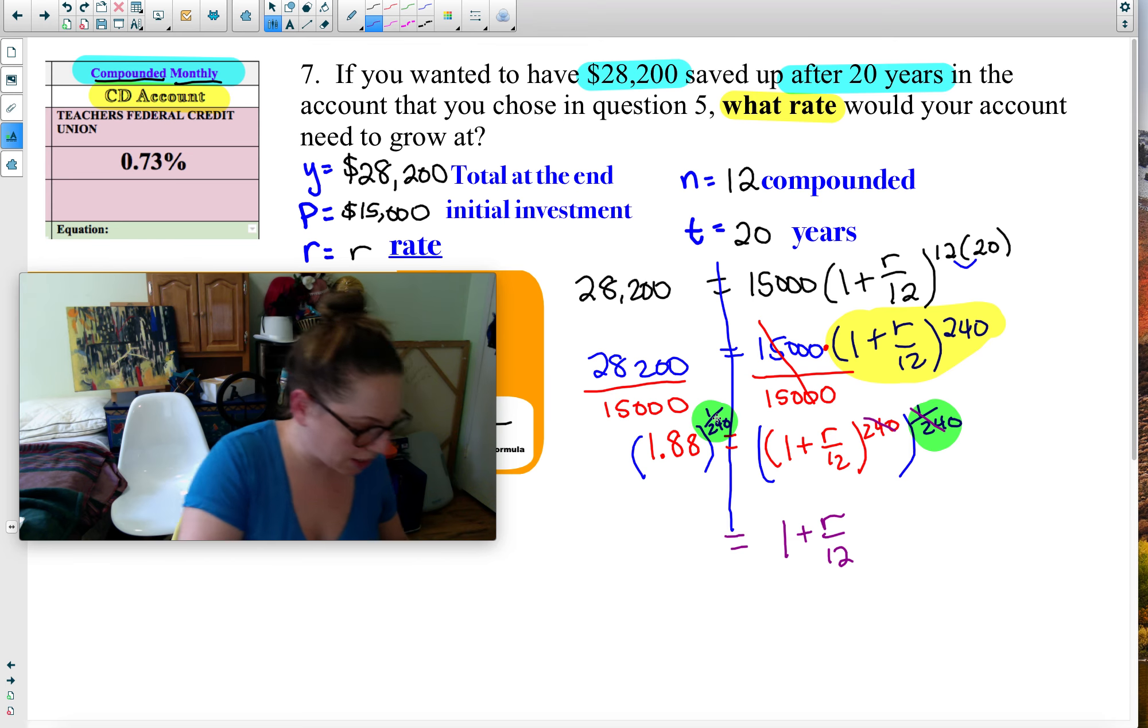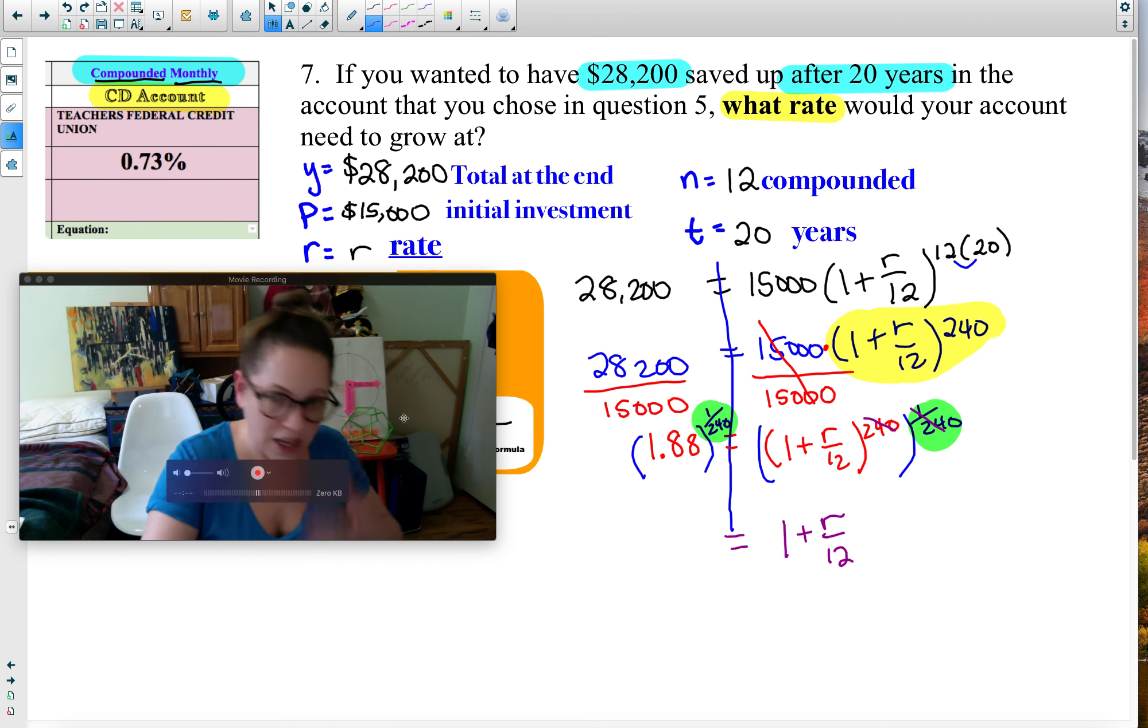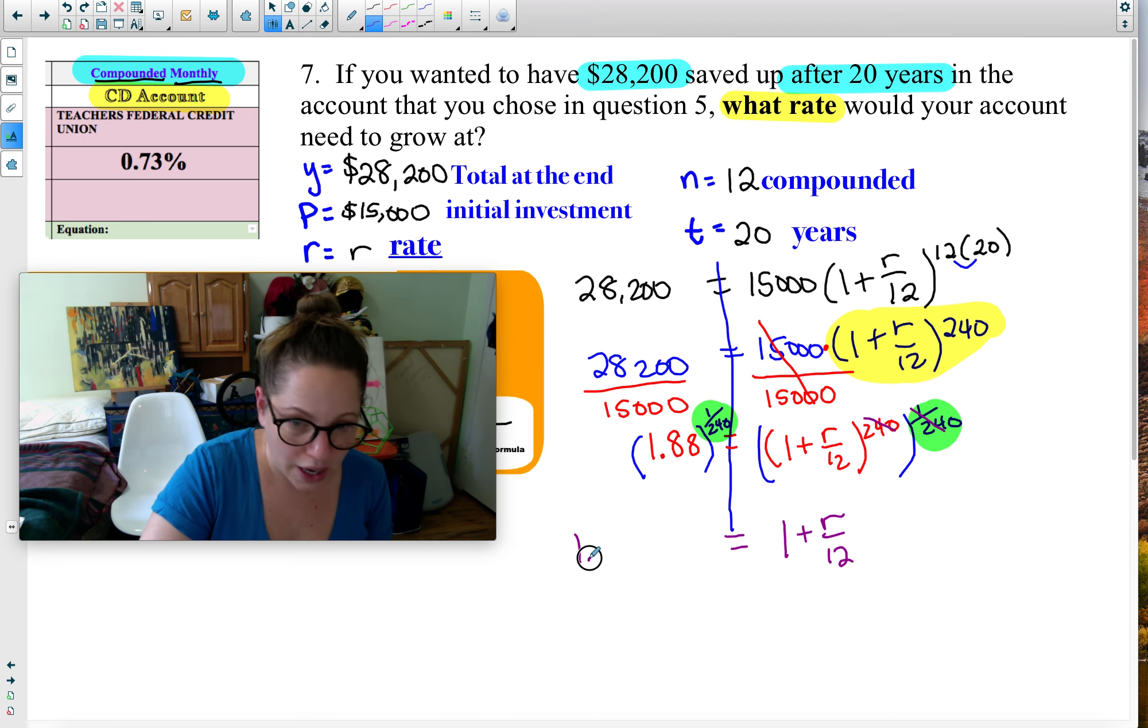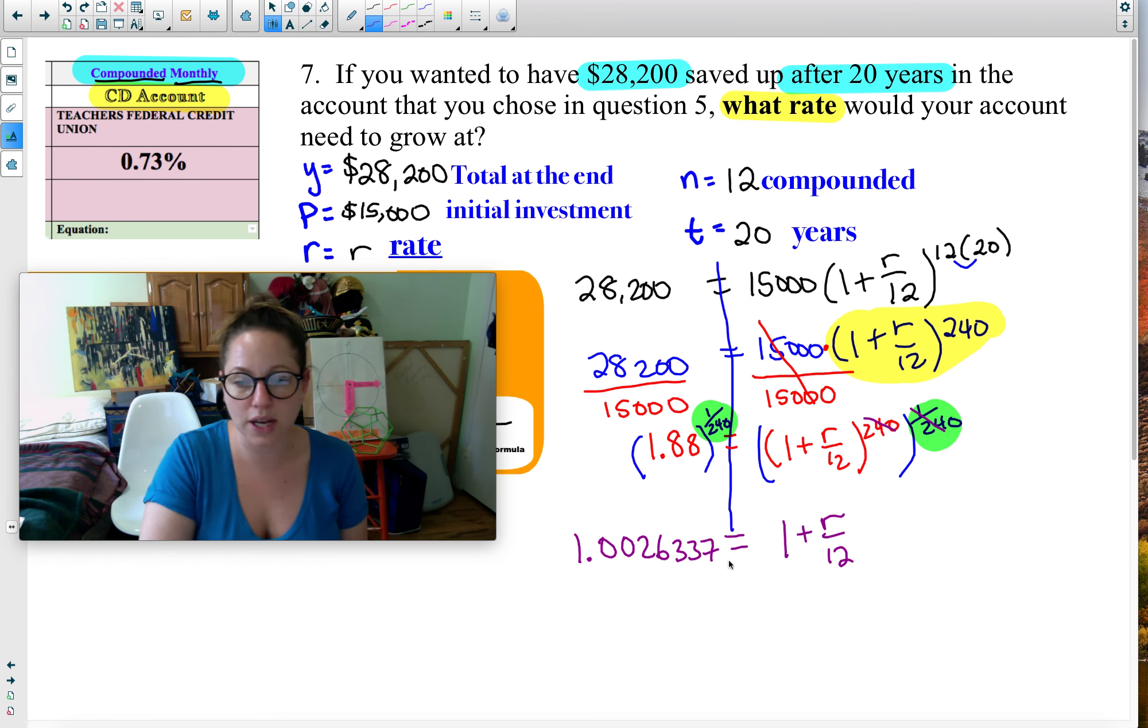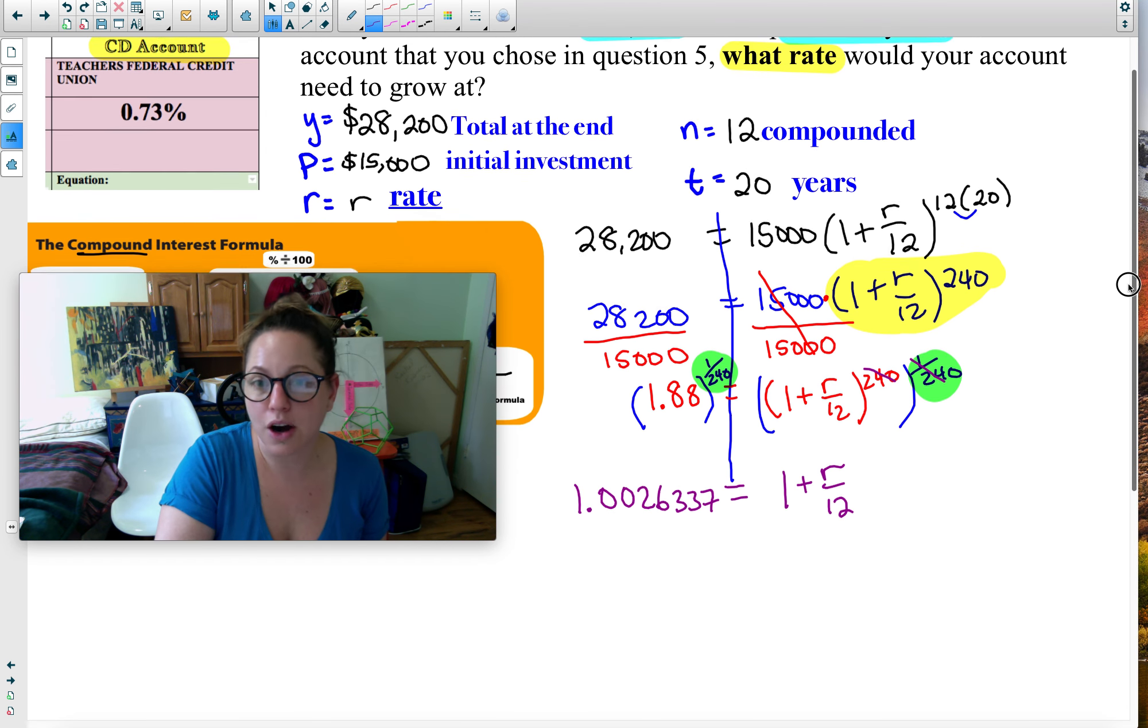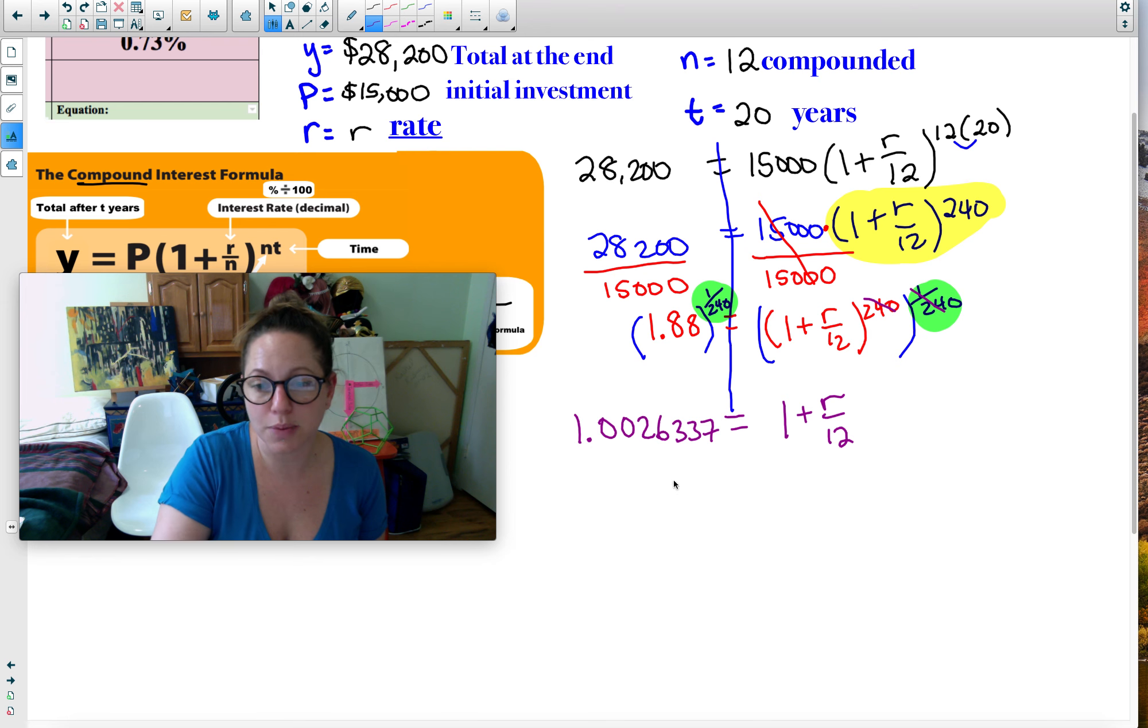I put this in my calculator. Make sure you're using a Desmos calculator. Do not use your iPhone. And I write out the whole number with six decimal places or more. A nice long decimal. My goal is to get r by itself. So let's keep going.